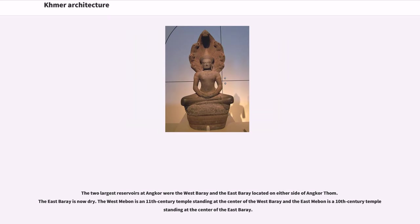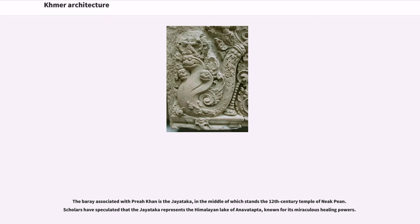The two largest reservoirs at Angkor were the West Baray and the East Baray, located on either side of Angkor Thom; the East Baray is now dry. The West Mebon is an 11th-century temple standing at the center of the West Baray, and the East Mebon is a 10th-century temple standing at the center of the East Baray. The Baray associated with Preah Khan is the Jayatataka, in the middle of which stands the 12th-century temple of Neak Pean. Scholars have speculated that the Jayatataka represents the Himalayan lake of Anavatapta, known for its miraculous healing powers.